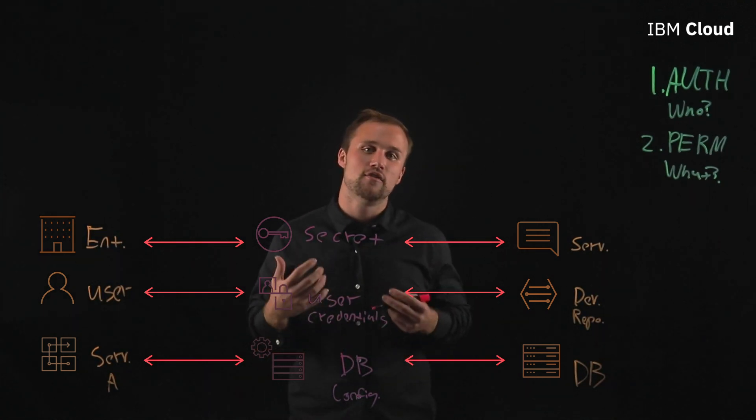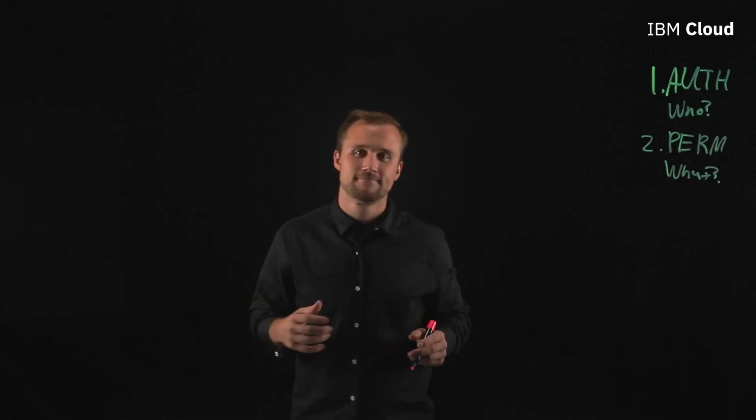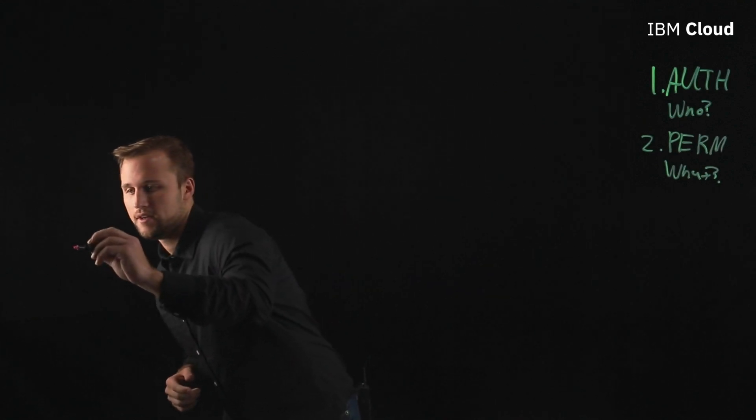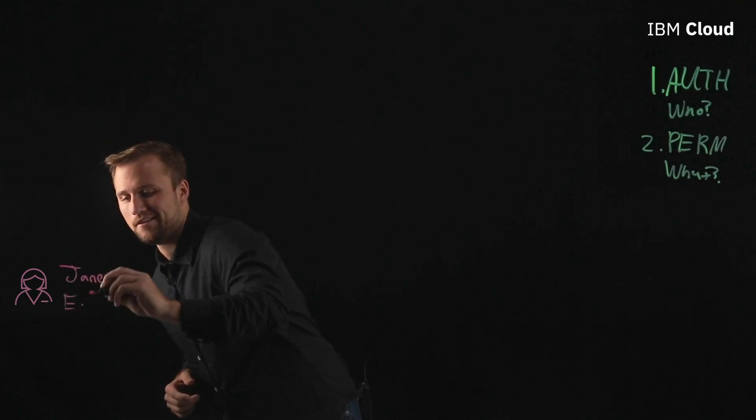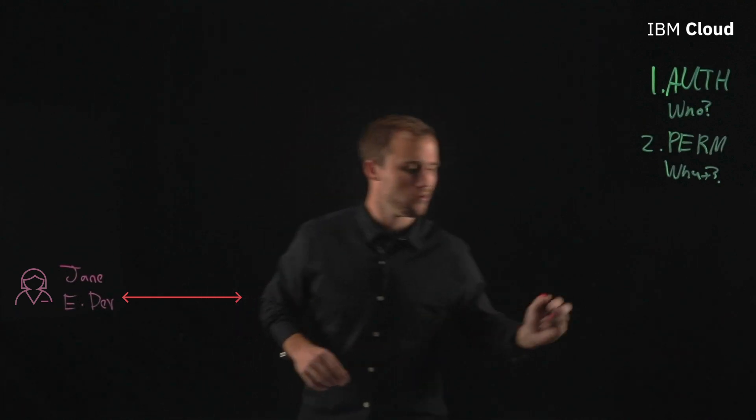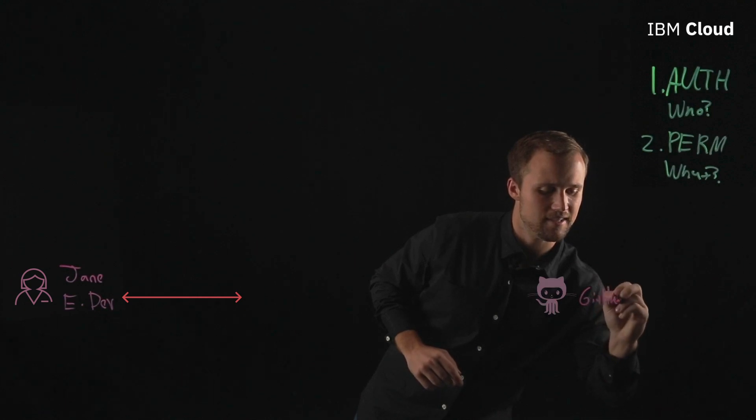Now let's take a look at the next layer of the onion in a more complicated example. Let's go back to Jane the enterprise developer. Jane, we'll say edev here, needs again to have access to that development repo that she was referring to earlier. Let's just go ahead and call this maybe it's GitHub.